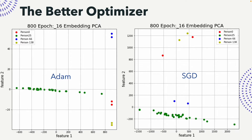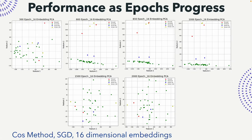Another way of looking at this was to create a PCA plot — taking embeddings of four different people, you can see the green, blue, and red dots representing different photos of each person. The model trained with Adam provides much better embeddings in terms of intra-class compactness and inter-class distance, which further supports Adam as the better optimizer. This is a small dataset of about 1500 images, so it does lead to some overfitting.